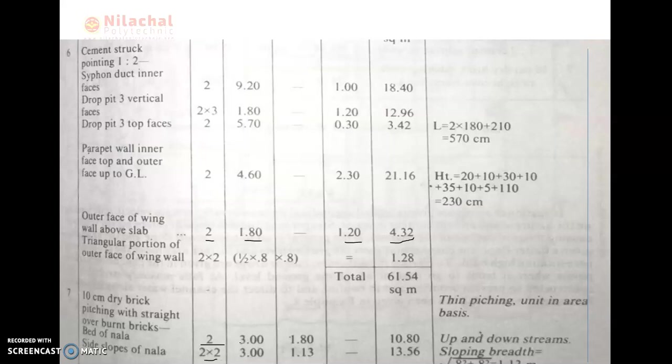The bed of nada total value for 10 centimeter: 2 × 3.0 × 1.80 = 10.80 square meters. Side slope of nada: 2 × 2 × 3.0 × 1.13 = 13.56 square meters. The total value of 10 centimeter dry brick pitching with straight over ground is 10.80 + 13.56 = 24.36 square meters. The dry brick pitching unit is square meters because thickness is already given. The total quantity calculation of the siphon drop is now completed. In the next class, we will discuss another figure of siphon drop.